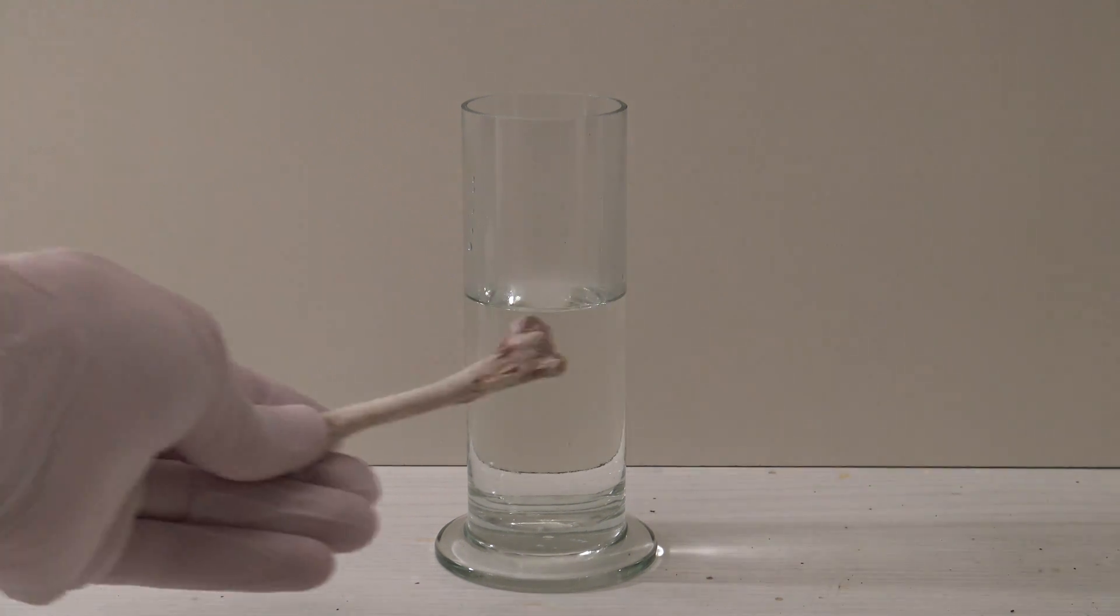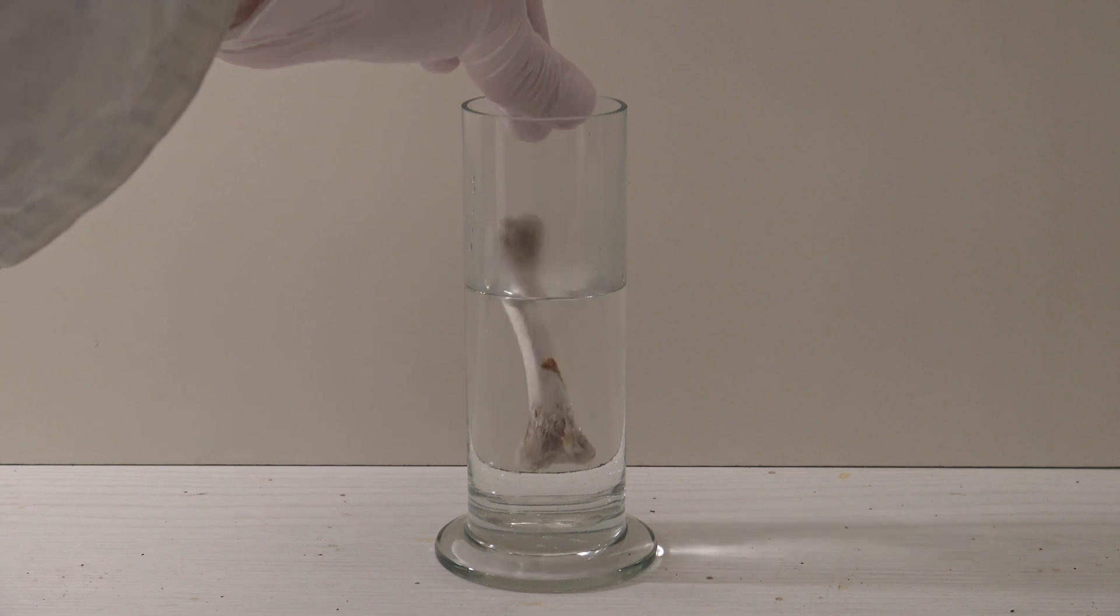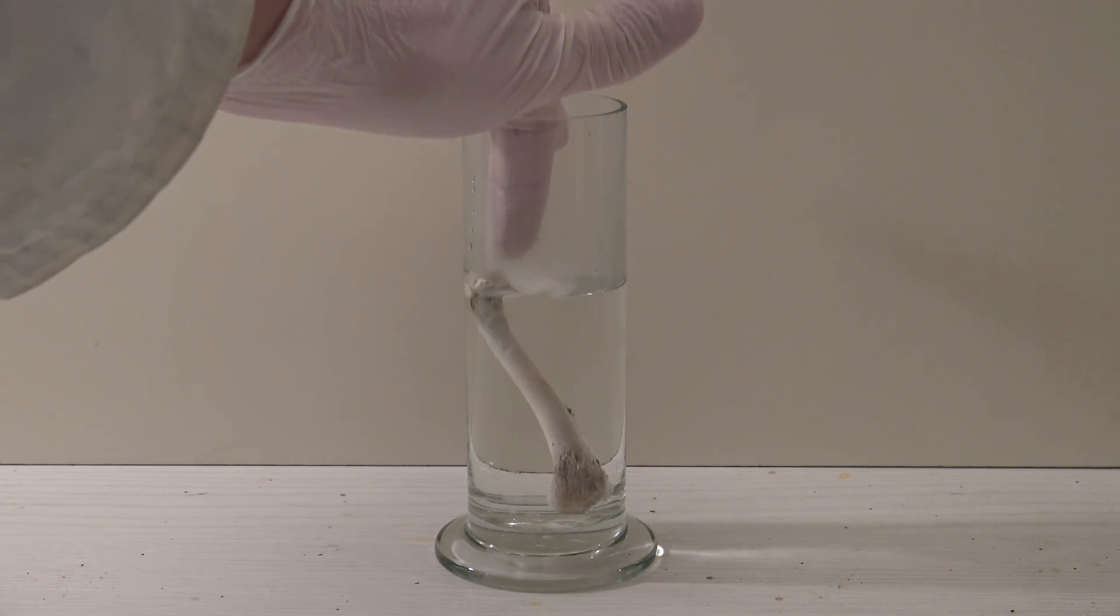Next a chicken bone was added to the acid. As it can be seen it floats because it was dried before and the bones from birds do contain air pockets.